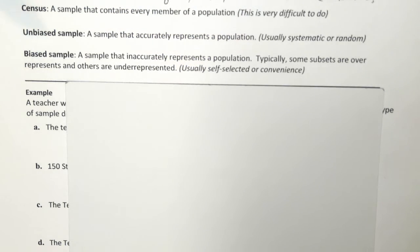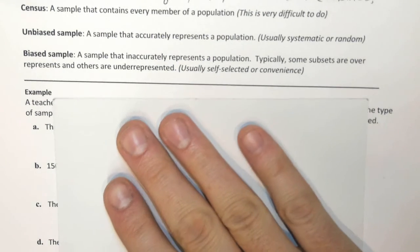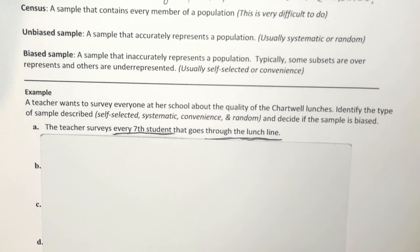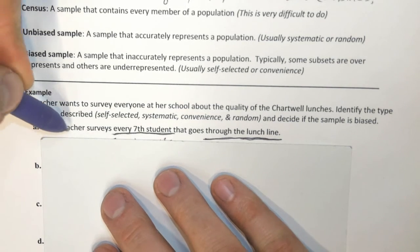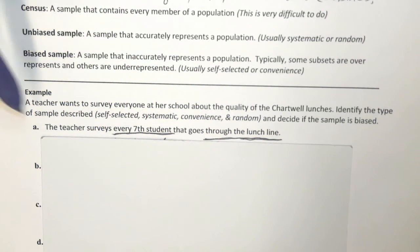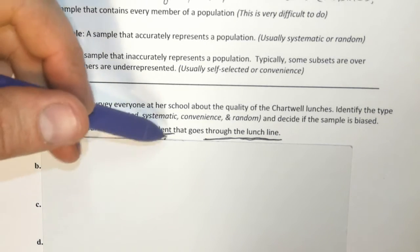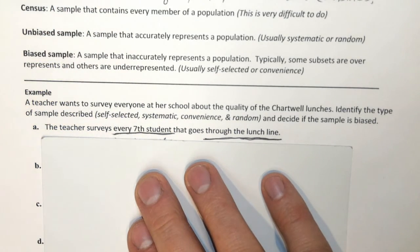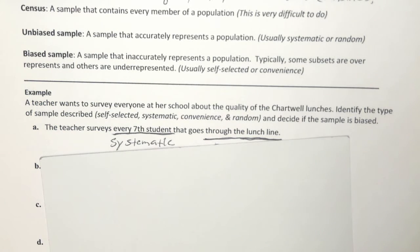Those are ones you want to try to avoid. Now I'm going to show you a couple of examples where we'll try to decide exactly what sampling technique was used, and then decide if it was a good sample — unbiased — or a bad sample — biased. A teacher wants to survey everyone in her school about the quality of the cafeteria lunches. In the first case, the teacher surveys every seventh student that goes through the lunch line.